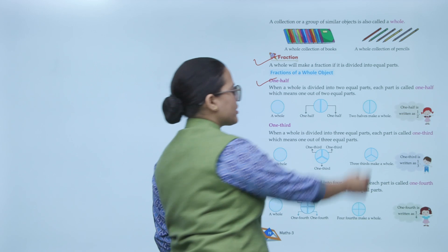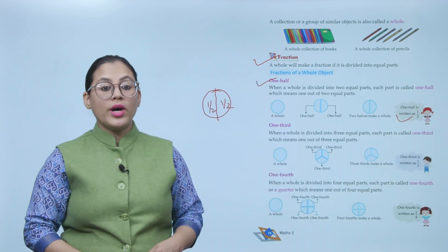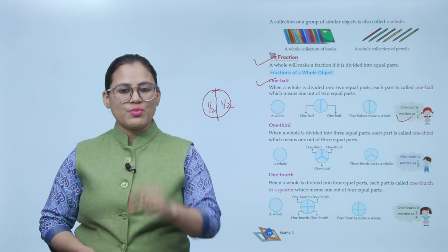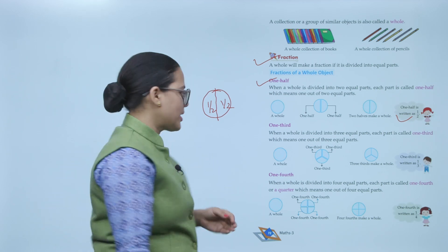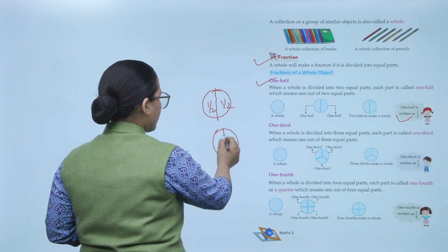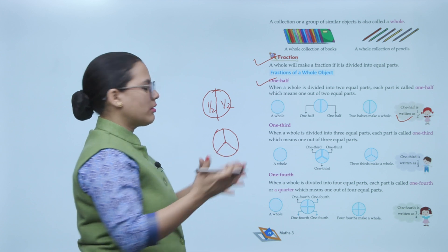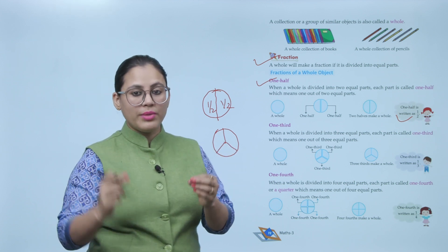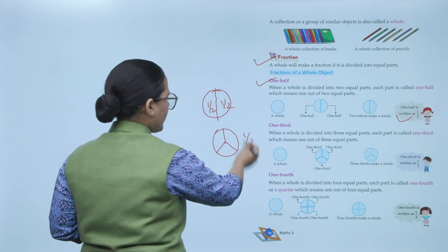One half is written as 1 by 2. Next, one third: when a whole is divided into three equal parts, each part is called one third, which means one out of three equal parts. One third is written as 1 by 3.